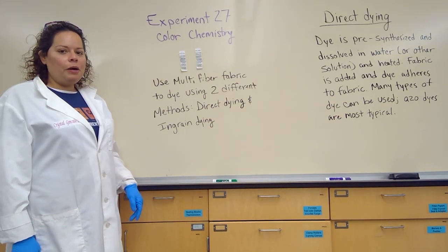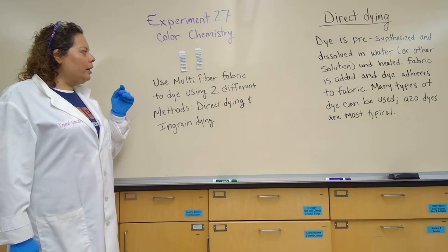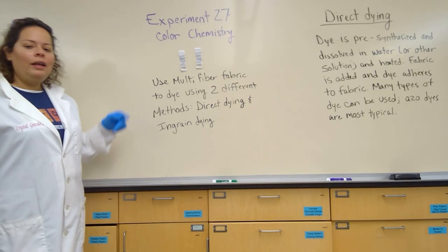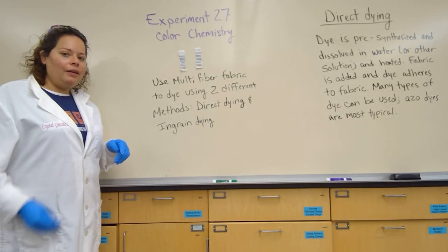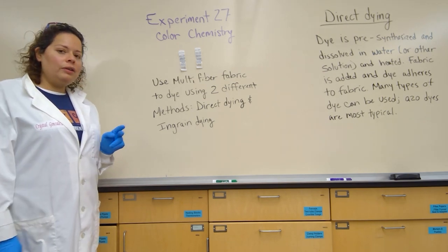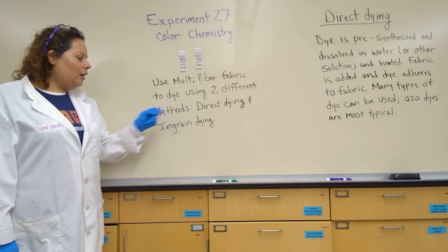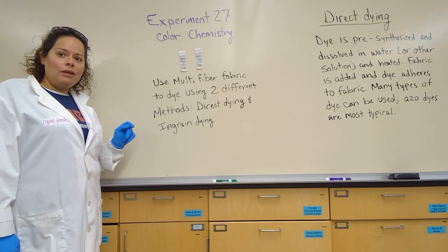Today we are looking at experiment 27, color chemistry. We're going to use multi-fiber fabric strips to dye our fabrics, and we're going to investigate two different types of dyeing methods. We're going to take a look at direct dyeing and ingrain dyeing for today.